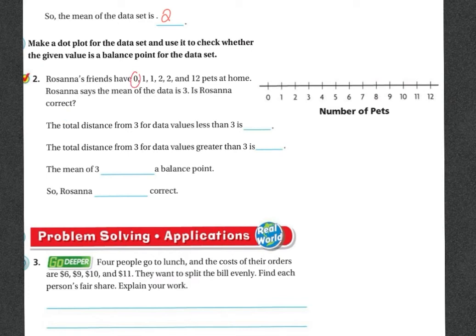You have one student that has zero, this student has 1, this student has 1, this student has 2, this student has 2, and then you have one student that has 12 pets.